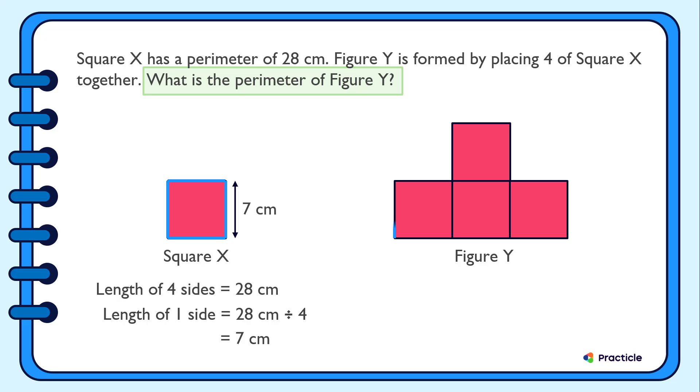We have 1, 2, 3, 4, 5, 6, 7, 8, 9, 10. 10 sides. And we know that each of these sides is 7 cm long, correct?